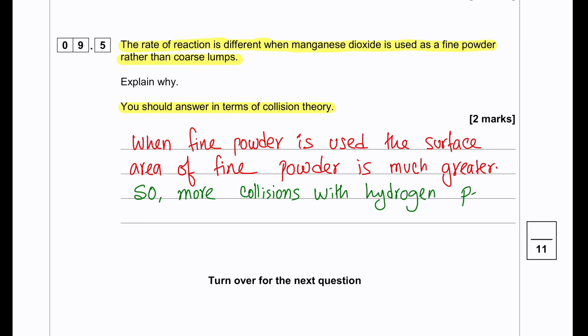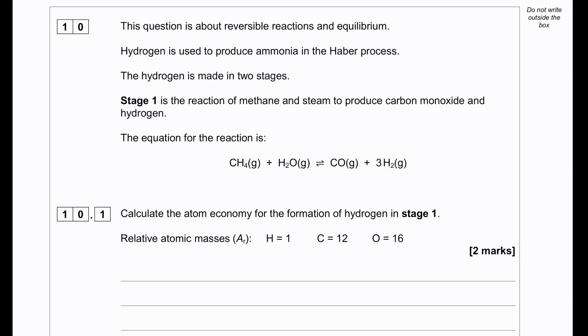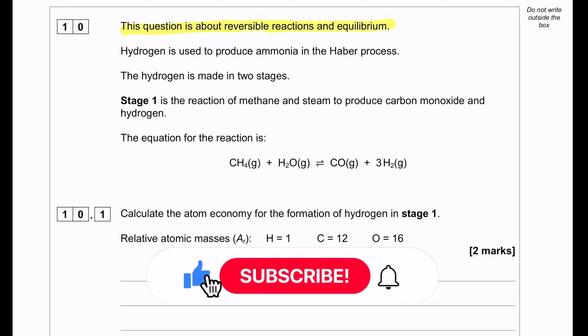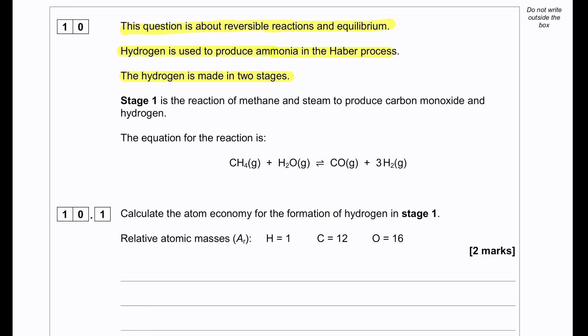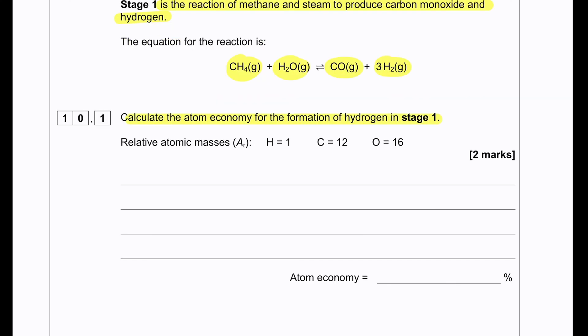This question is about reversible reactions and equilibrium. Hydrogen is used to produce ammonia in the Haber process. The hydrogen is made in two stages. Stage 1 is the reaction of methane and steam to produce carbon monoxide and hydrogen. So methane as a gas reacts with steam to produce carbon monoxide and hydrogen. Calculate the atom economy for the formation of hydrogen in stage 1. When calculating the atom economy, we have to take into account only the product that is produced and the amount of reactant in total.